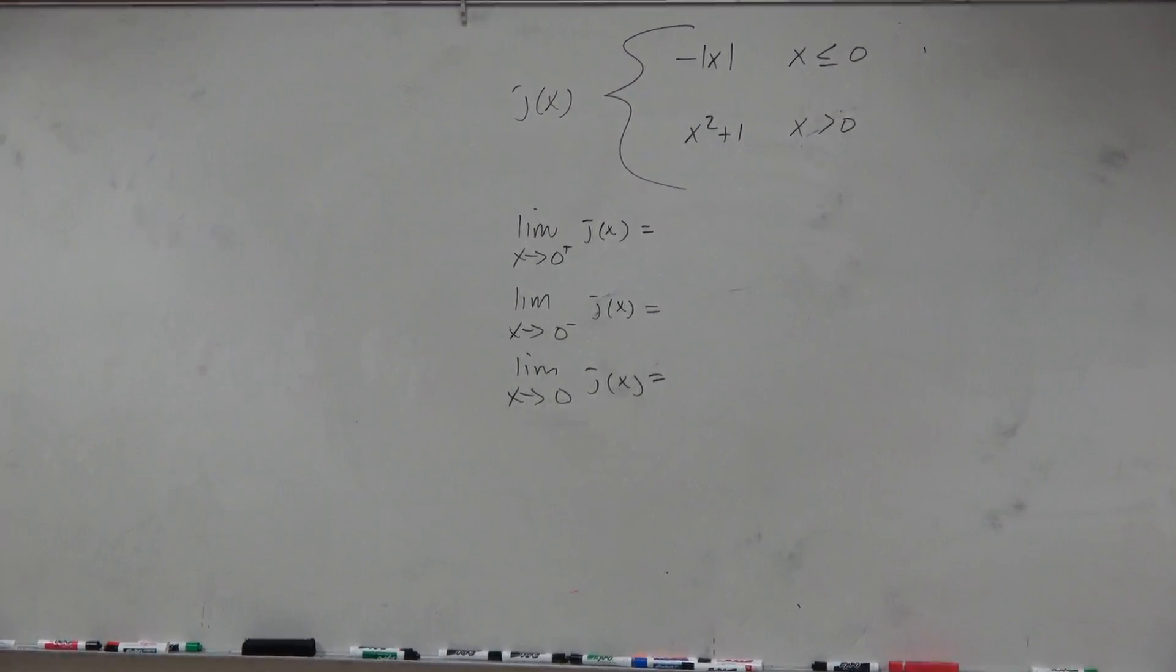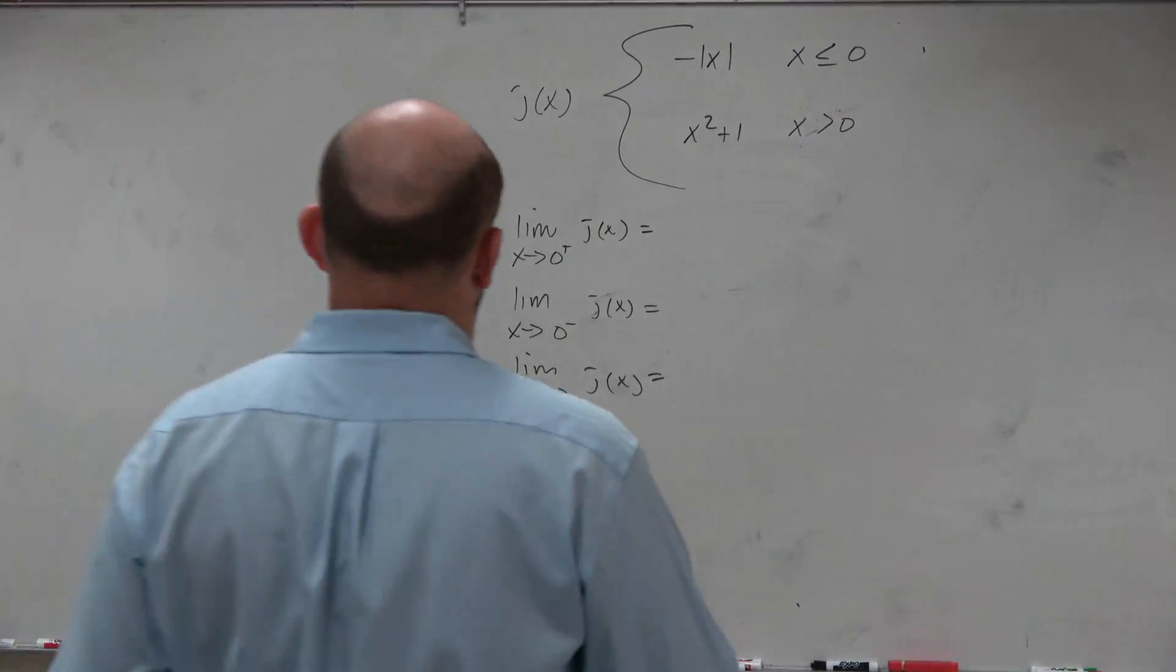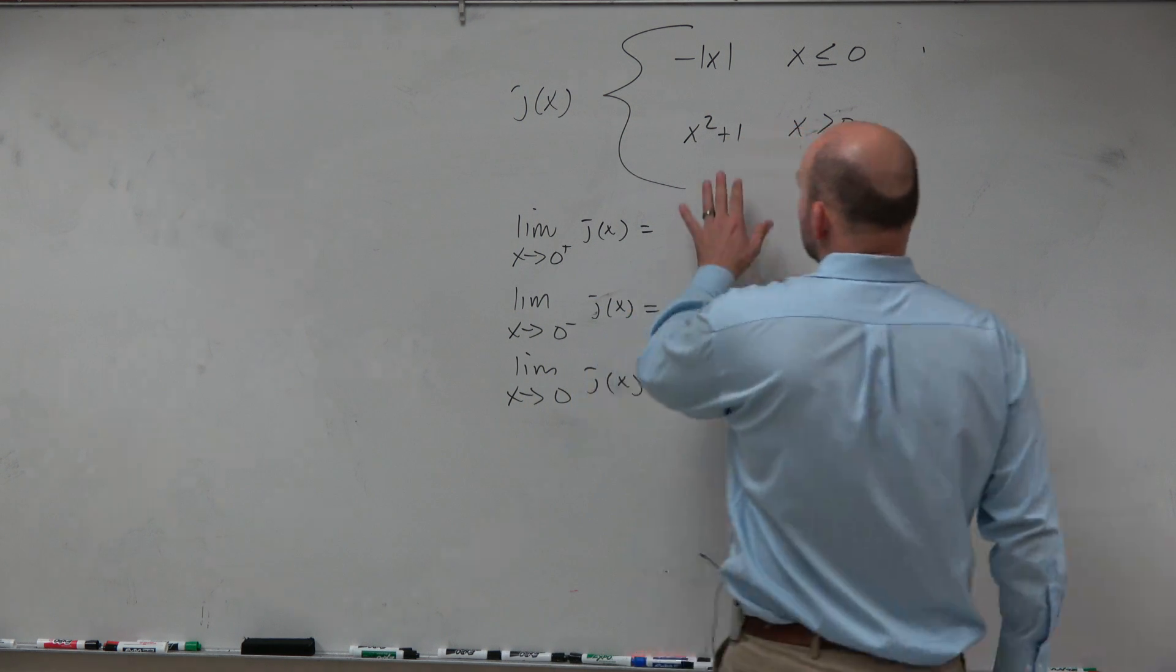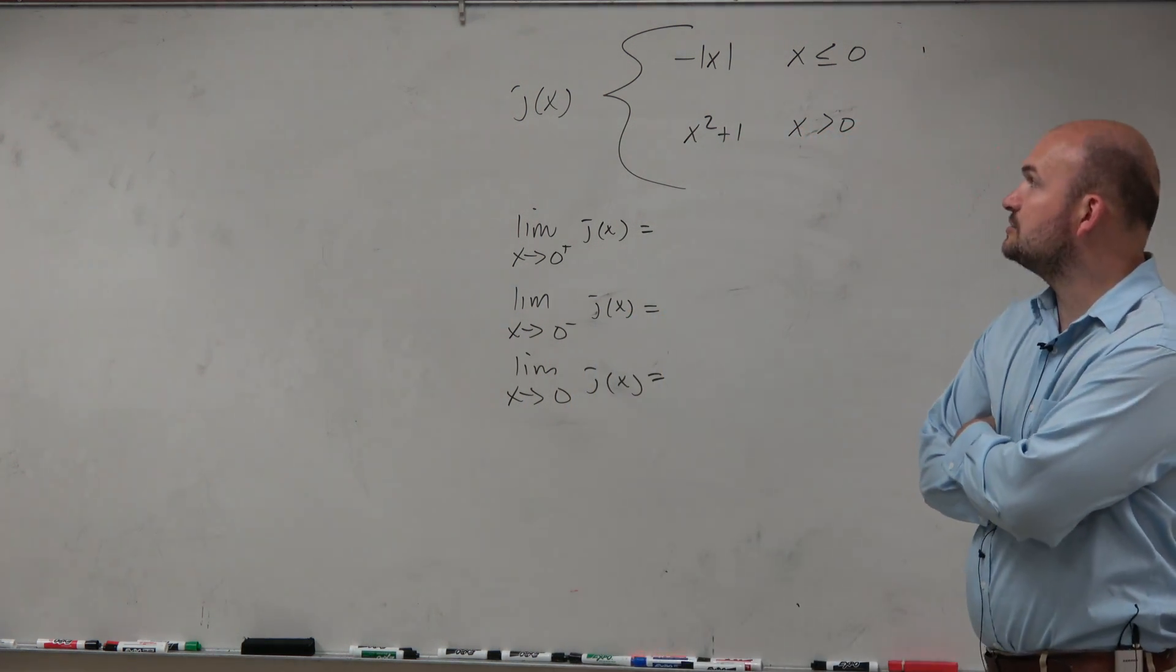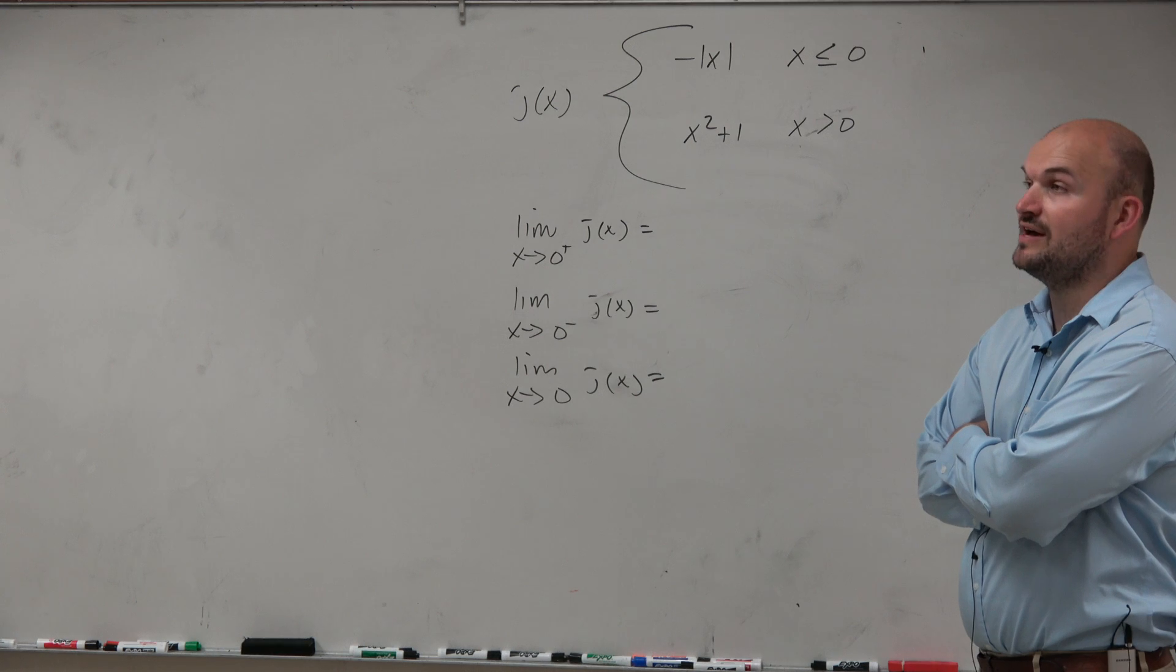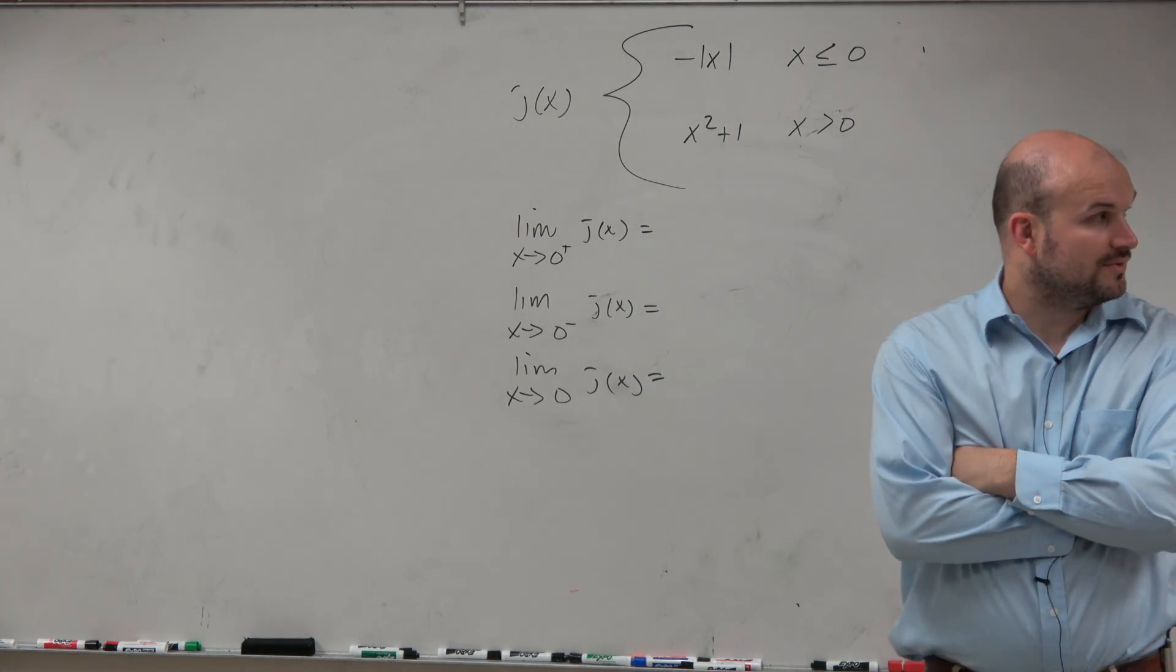So in this last example, ladies and gentlemen, what we need to do is... we have two functions. We have negative absolute value of x, and we have x squared plus 1.